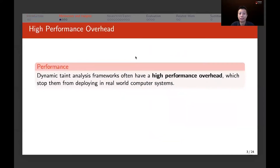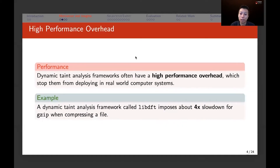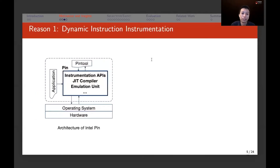Dynamic taint analysis often has high performance overhead, which prevents it from being widely deployed in real-world systems. For example, a framework called libDFT has full-time slowdown for GZIP compression of files. We investigated why taint analysis is slow. The first reason is dynamic instrumentation — taint analysis is usually done using Intel Pin, which instruments taint logic dynamically at runtime. Intel Pin requires instrumentation APIs, JIT compilers, and emulation units, all of which add additional overhead.